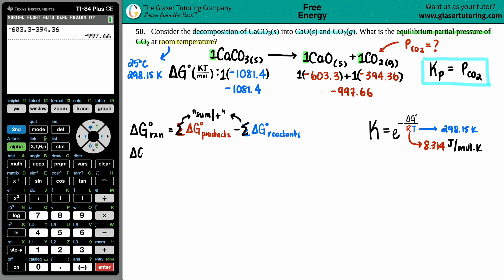And now we can do products minus reactants. So delta G for the whole entire reaction would be -997.66 minus the -1081.4.